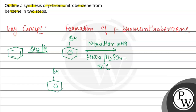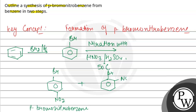Here we have bromine on the ring, and the nitro group is added. This gives para-bromo-nitrobenzene as the major product. We also get ortho-bromo-nitrobenzene as a byproduct, since bromine is an ortho/para director.